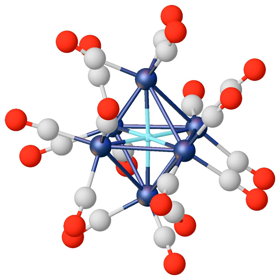Protide, deuteride, and tritide are used to describe ions or compounds which contain enriched hydrogen-1, deuterium, or tritium, respectively. In the classic meaning, hydride refers to any compound hydrogen forms with other elements, ranging over groups 1 to 16 — the binary compounds of hydrogen.